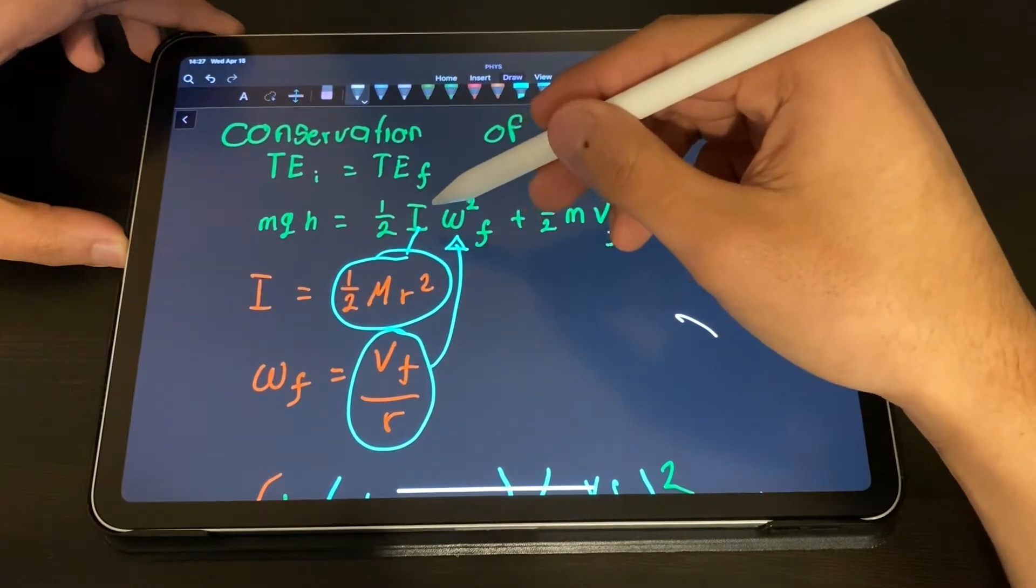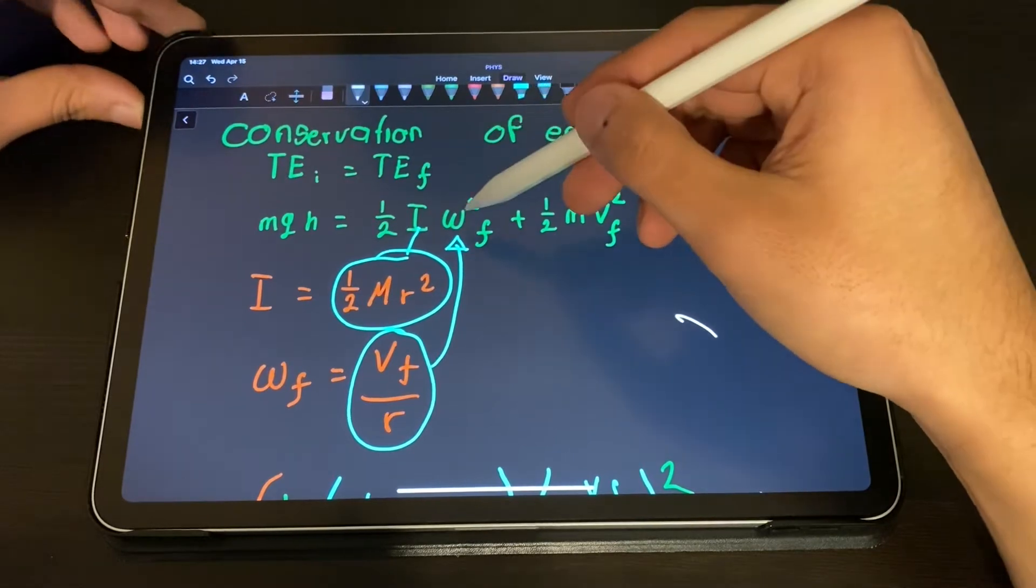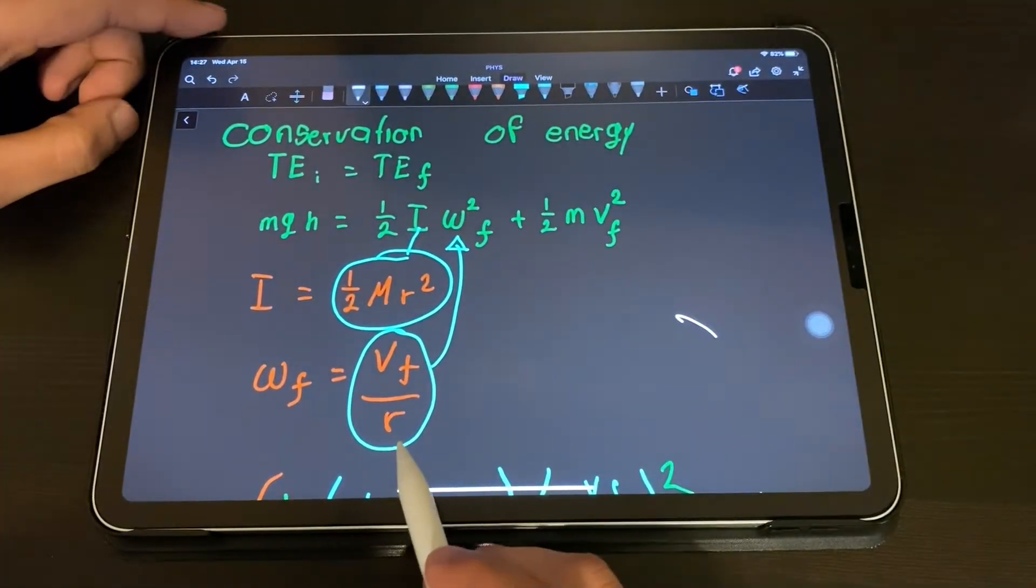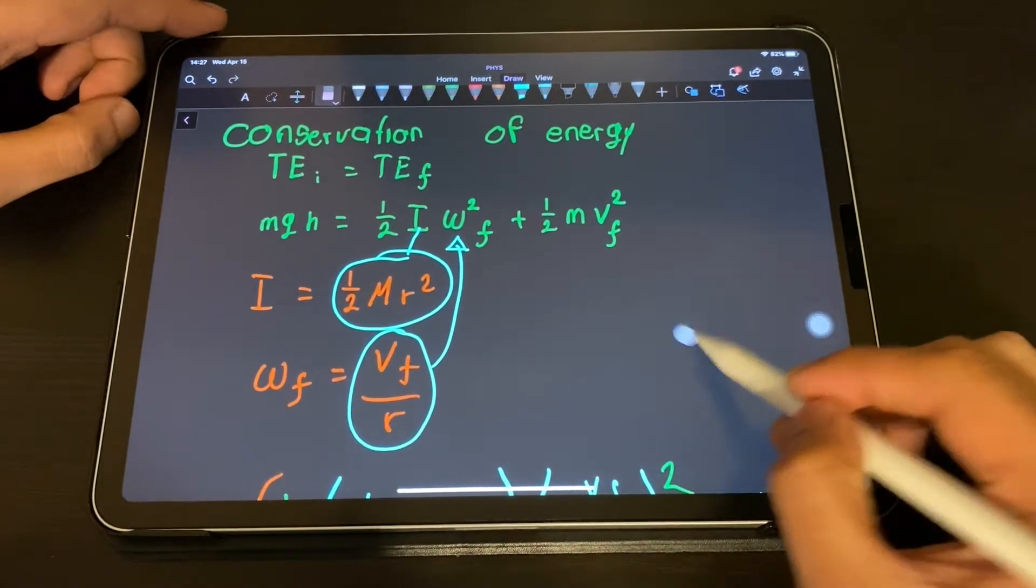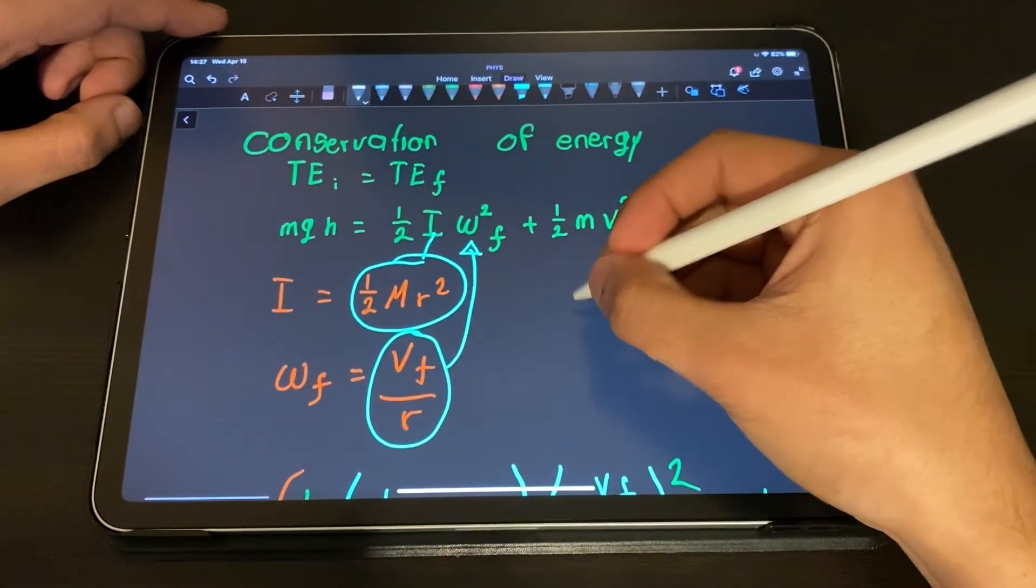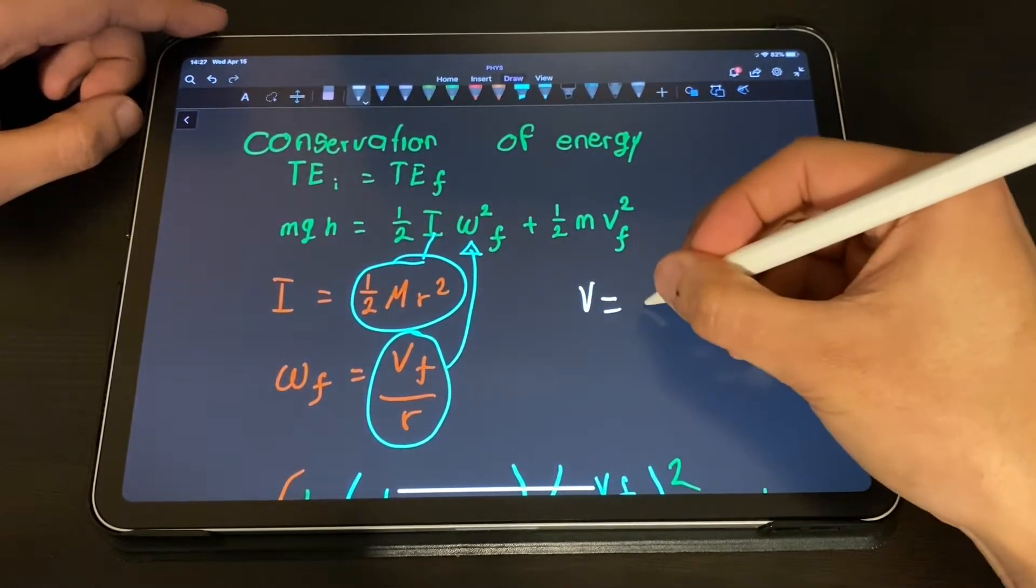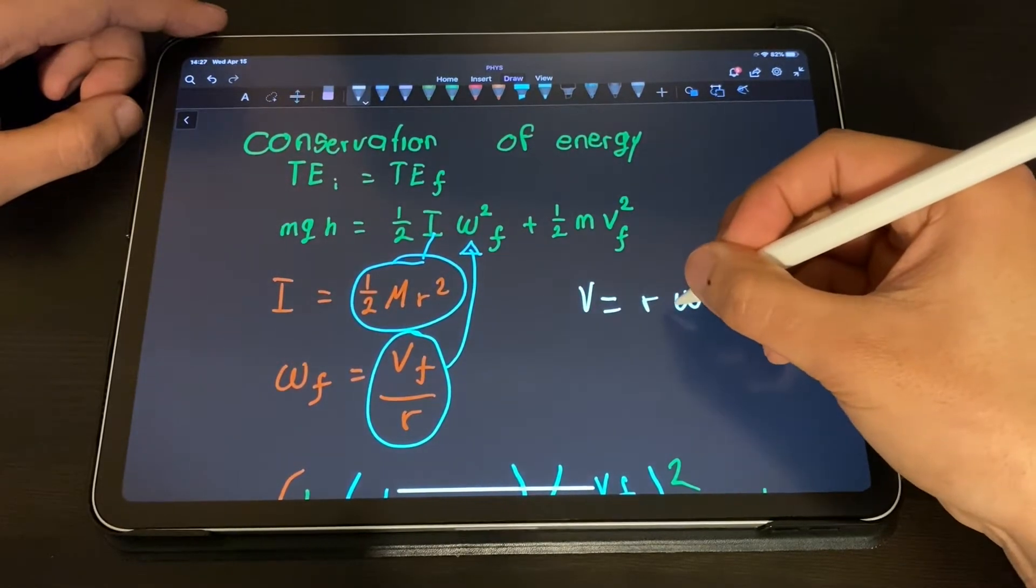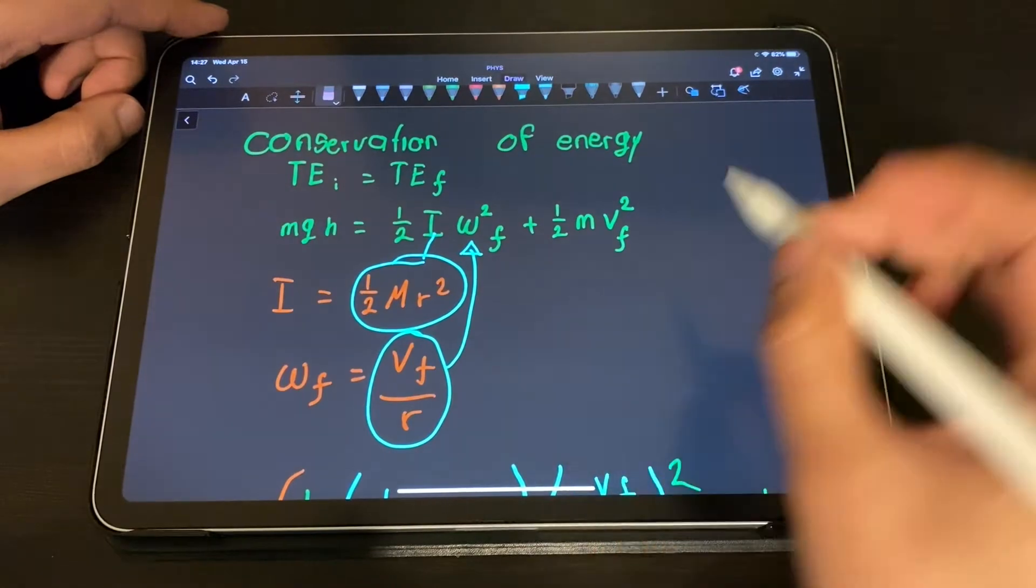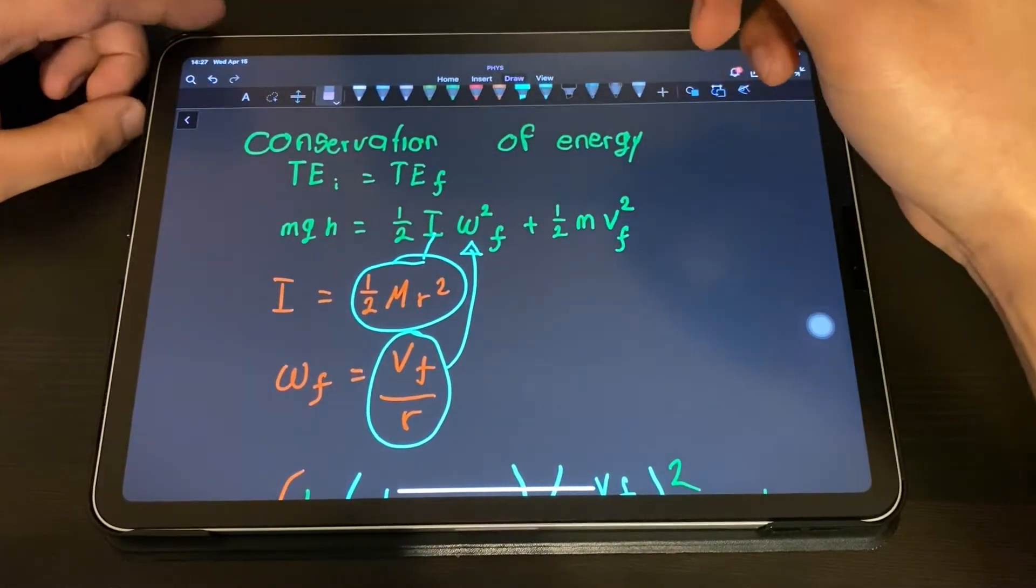First is the inertia and also the angular velocity. The velocity can be found as the angular velocity times the radius, so that's where this comes from.